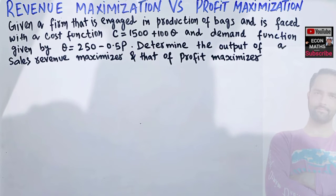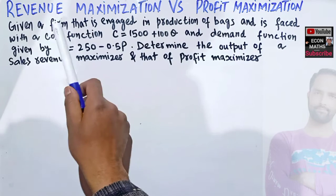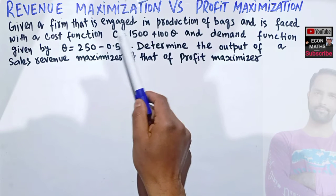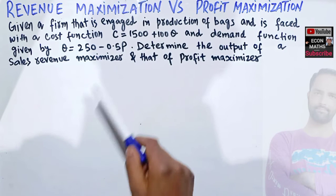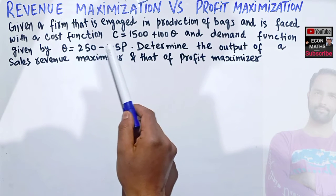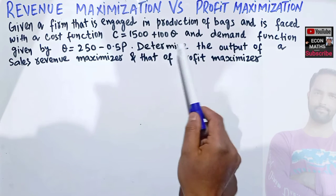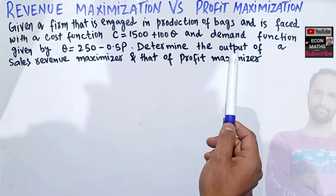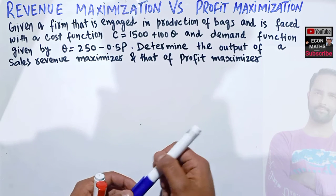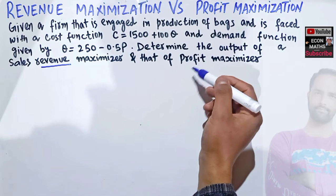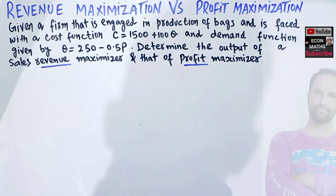In this video we will solve a numerical problem on revenue maximization and profit maximization. This question was asked by a brother on Telegram. Given a firm engaged in production of bags, we have to determine the output of a sales revenue maximizer and the output of a profit maximizer — that is, how much output will be produced if the goal is to maximize revenue, and how much if the aim is to maximize profit.